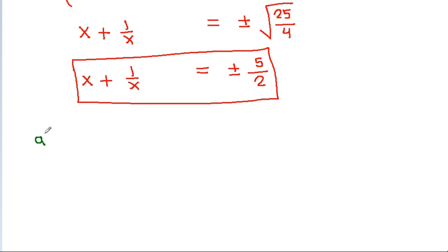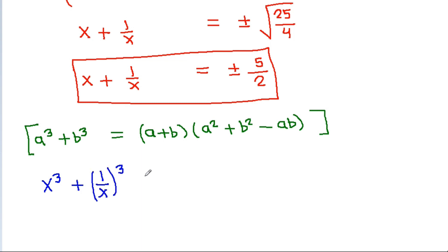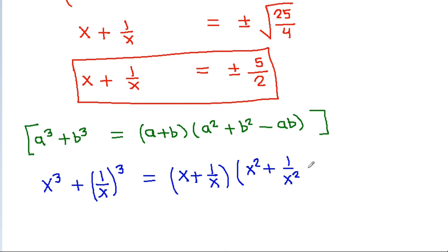Using the identity a cube plus b cube equals a plus b times a square plus b square minus ab, we set up: x cube minus 1 by x cube equals x plus 1 by x times x square plus 1 by x square minus x times 1 by x.